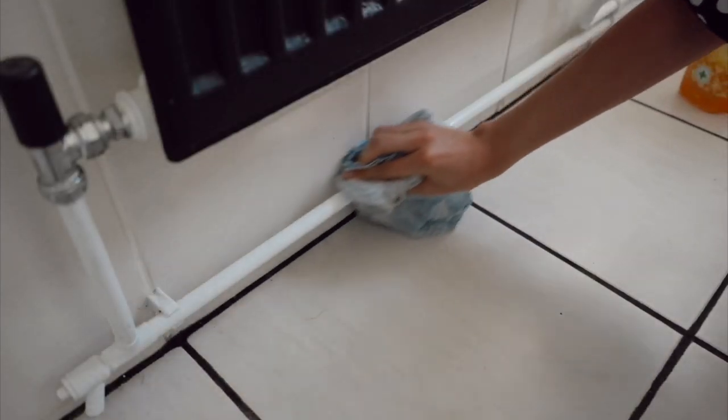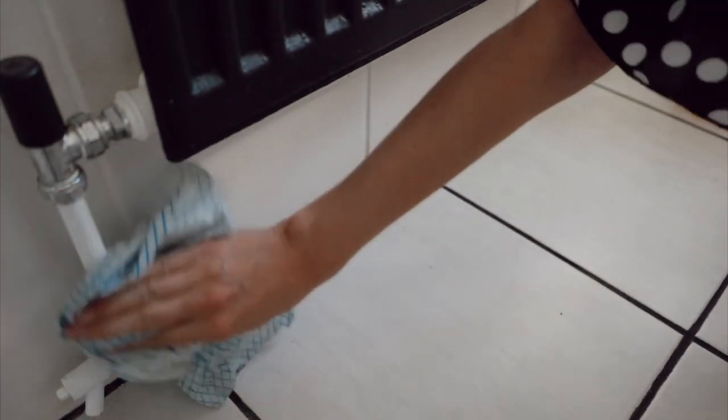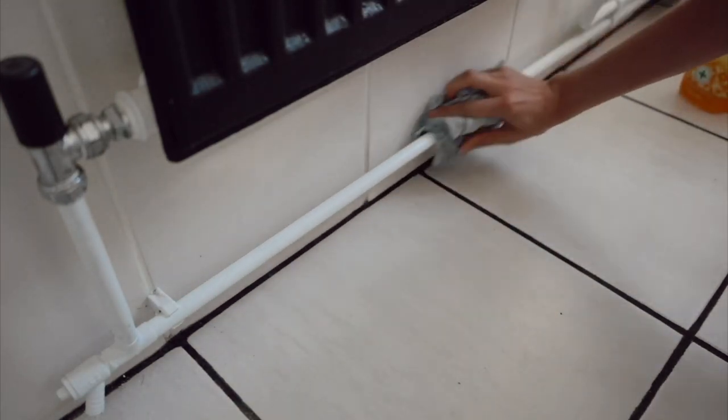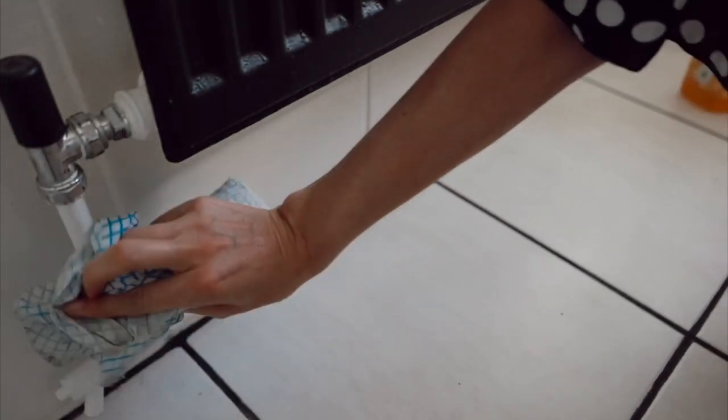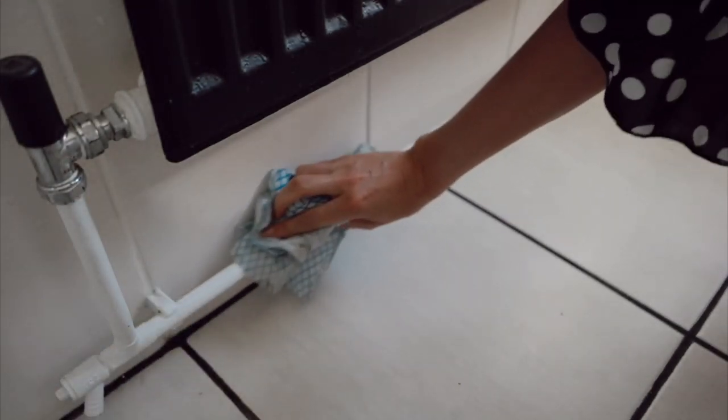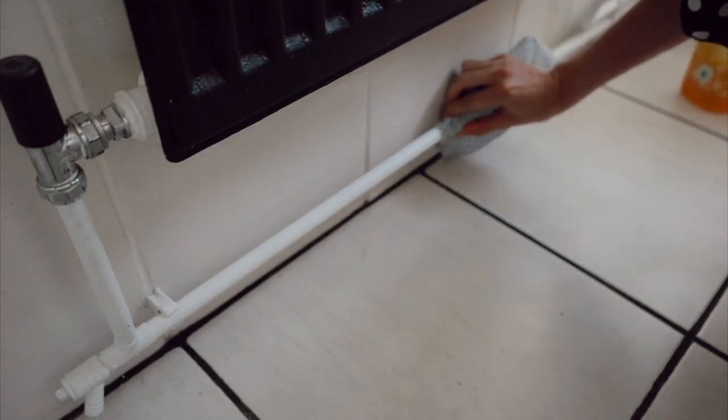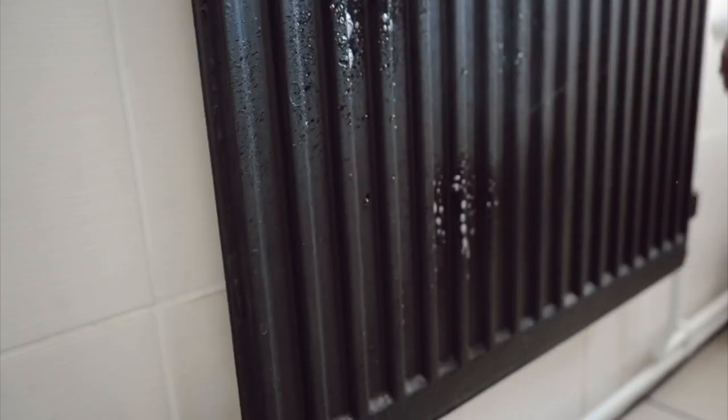The radiator was in a bad way when we moved in, so I painted it black and freshened up the pipes with a bright white. It looks so much better. All the different surface levels mean it really collects the dust though.